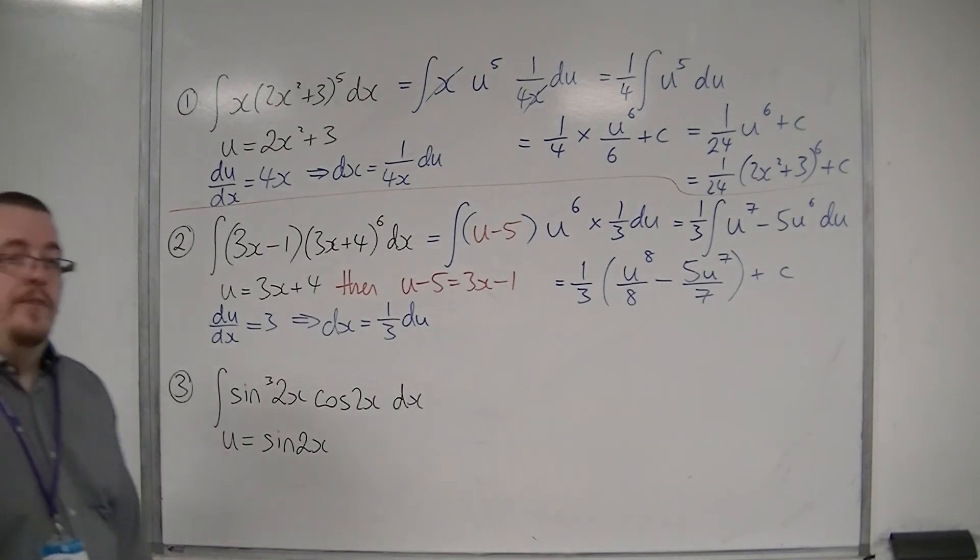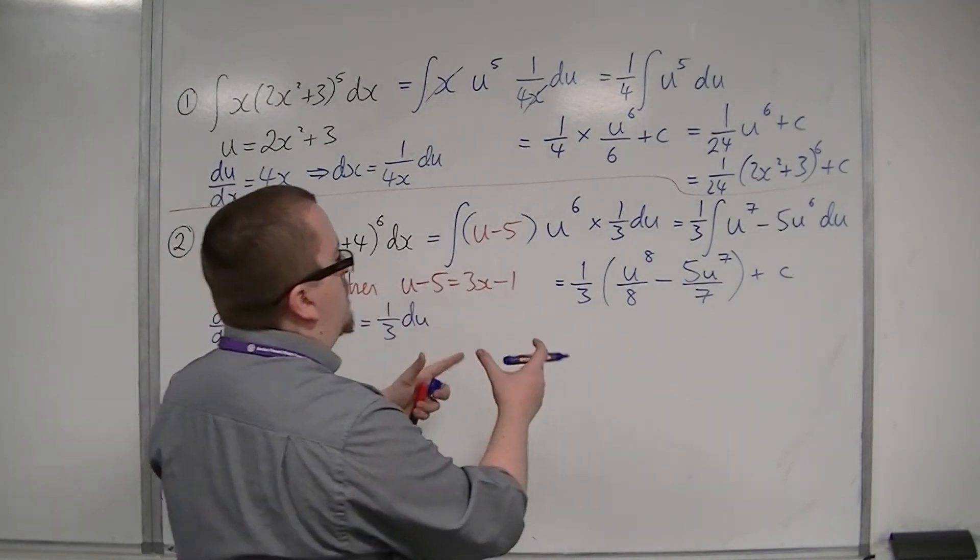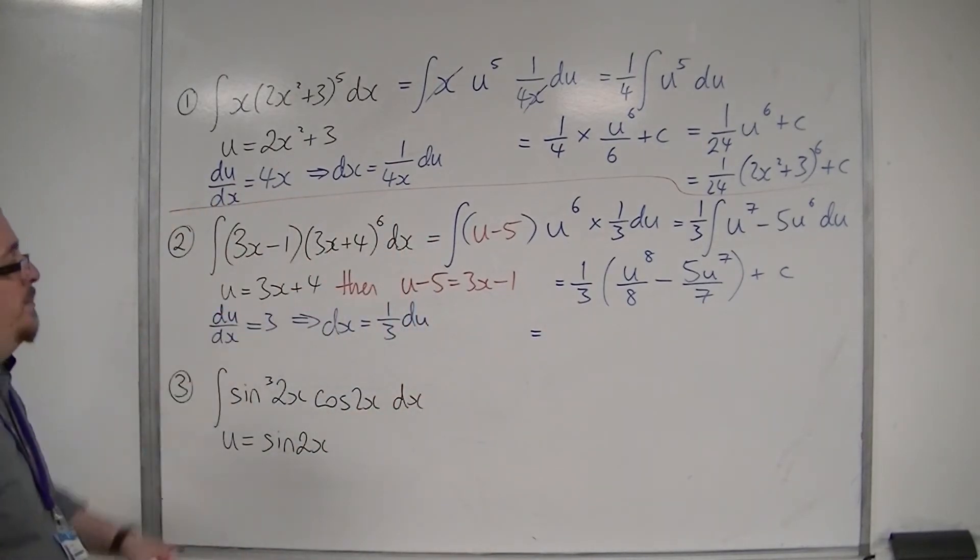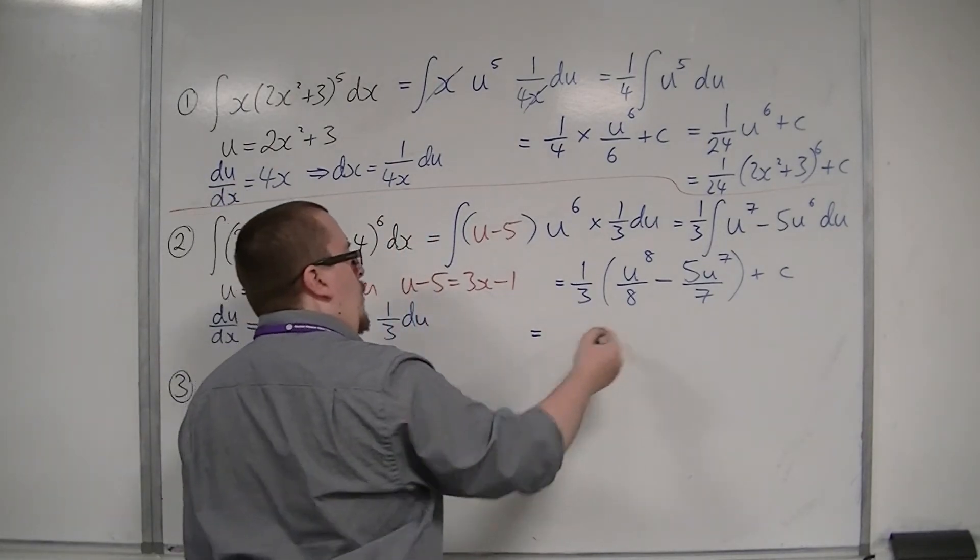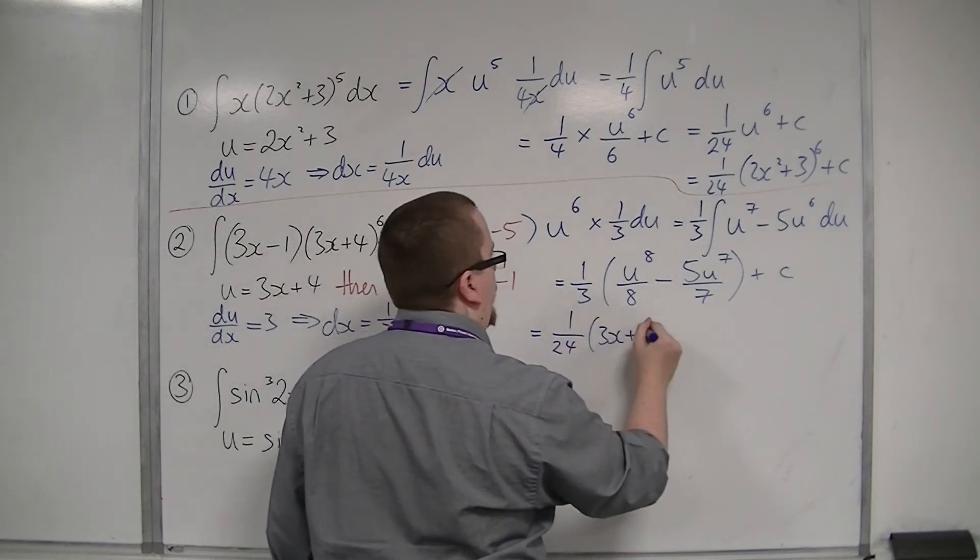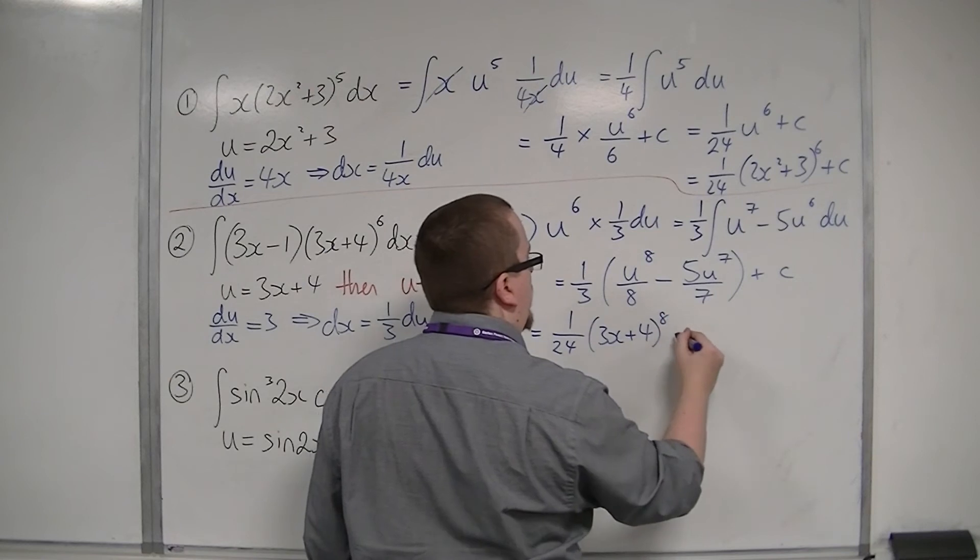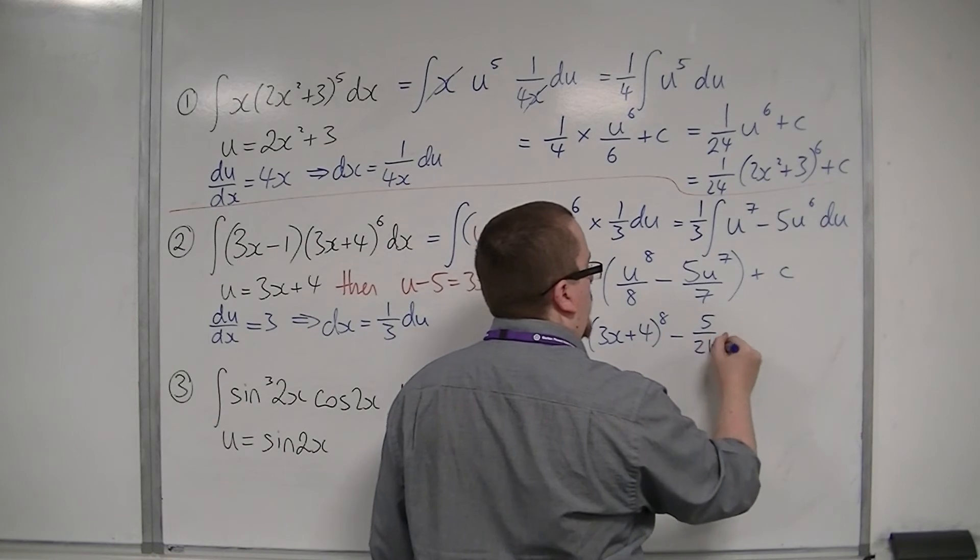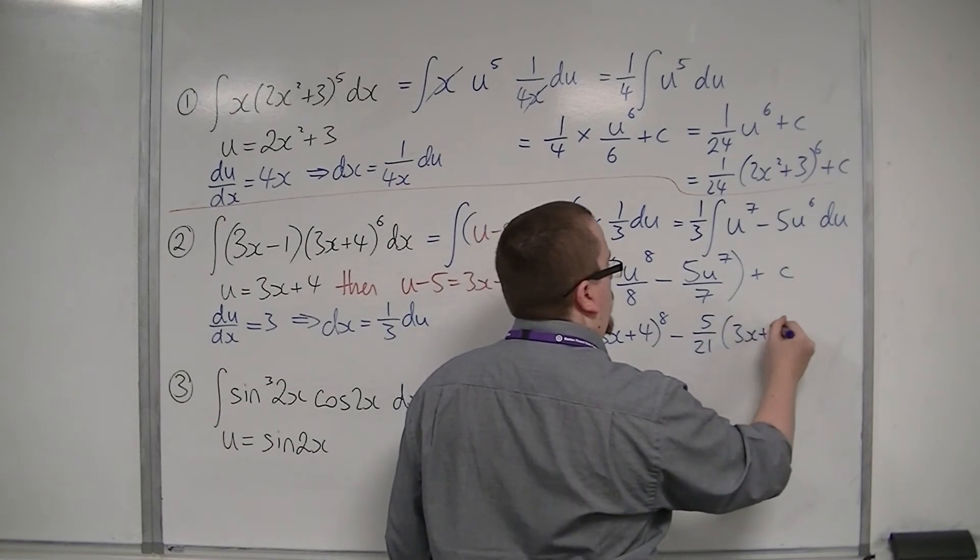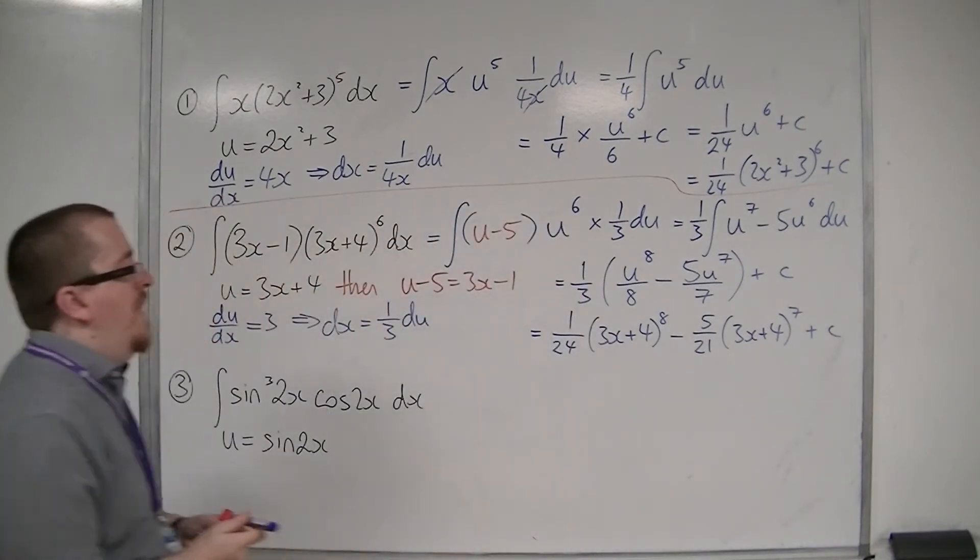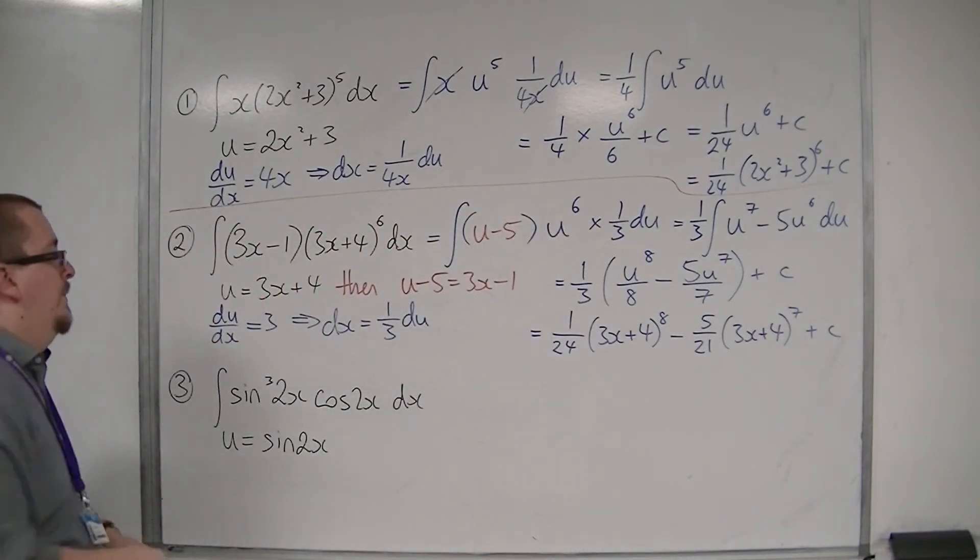And then I want to substitute in my u, the 3x+4. So I've got 1/24(3x+4)⁸, take away 5/7 times 3, so 5/21(3x+4)⁷, plus c. And that would be my final answer with that one.